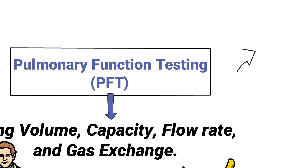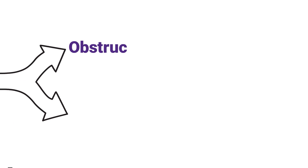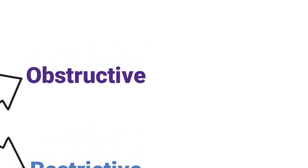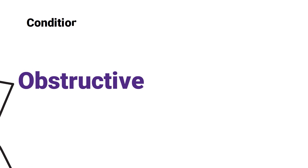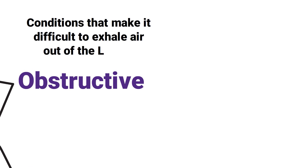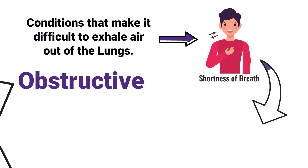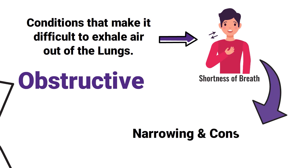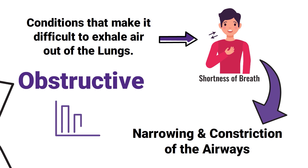In general, there are two types of lung disorders that PFTs can be used to assess: obstructive and restrictive lung diseases. Obstructive lung diseases include conditions that make it difficult to exhale air out of the lungs, resulting in shortness of breath from narrowing and constriction of the airways, ultimately causing the patient to have decreased flow rates.